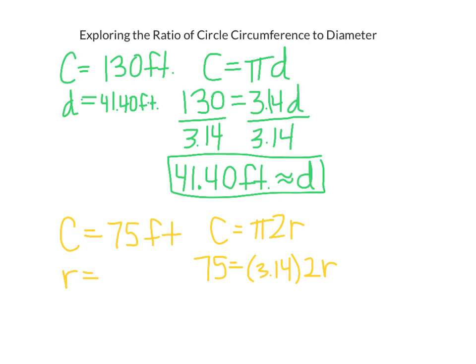That's just simplifying that side. And now to solve for radius, we divide both sides by 6.28 in order to undo the multiplication. That's inverse operations. And my answer is 11.9426, and it goes on from there. So if I'm going to round to two decimal places, 11.94 feet.